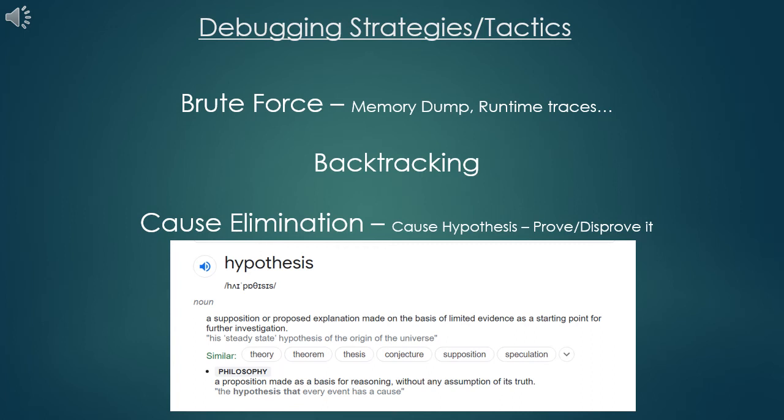The next tactic or strategy is backtracking. Backtracking is a more systematic and logical approach which you yourself would have probably used during your programming classes. Here, we simply trace back the code manually from the part where the error had occurred to find the cause. This will work only if the program is small and manageable. If the number of lines of code increases, backtracking becomes practically infeasible — you won't be able to trace back the error manually. So in real applications, it would be difficult to use this tactic.